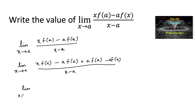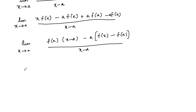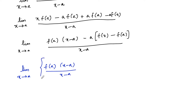Which can also be written as limit x tends to a. We can take f(a) common and write x minus a, and here we can take minus a common and write f(x) minus f(a) upon x minus a. Which can be written as limit x tends to a of f(a) into (x minus a) upon (x minus a), minus a times f(x) minus f(a) upon x minus a.